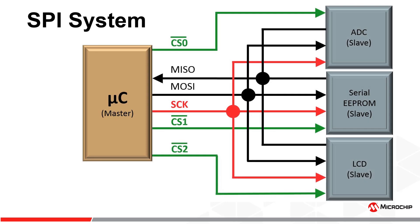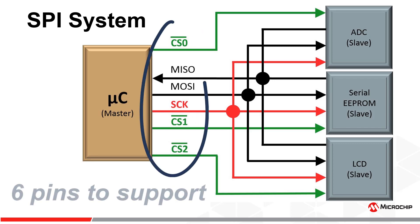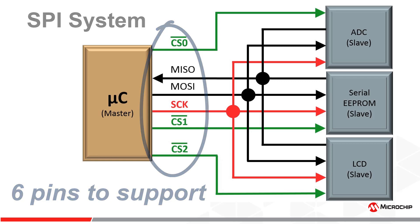Here is an example of four devices connected to the same SPI bus. The MCU controller is the SPI bus master, and the three slaves are an A-to-D converter, a serial EEPROM, and an LCD. Note that each slave device needs its own CS signal, or IO port, on the MCU — a total of six signals versus the two signals in a three-slave I2C system. But remember, we gained throughput speed with SPI.